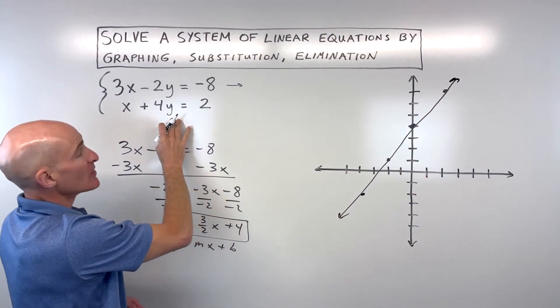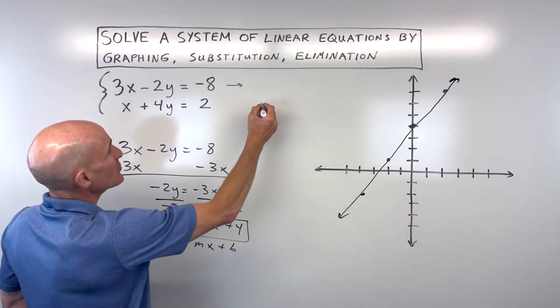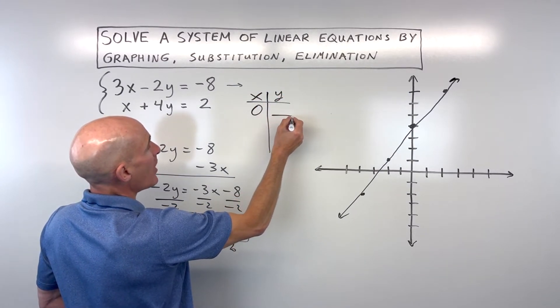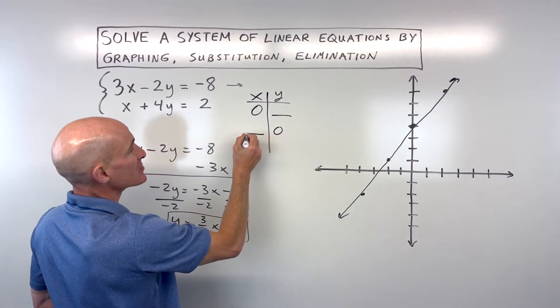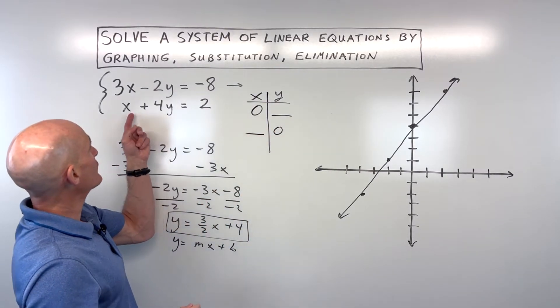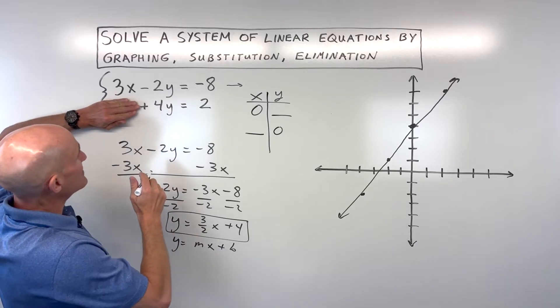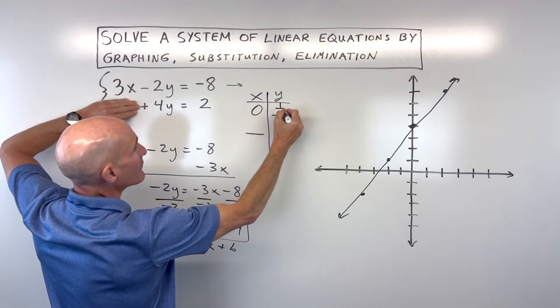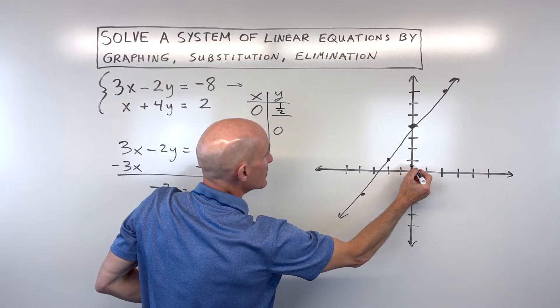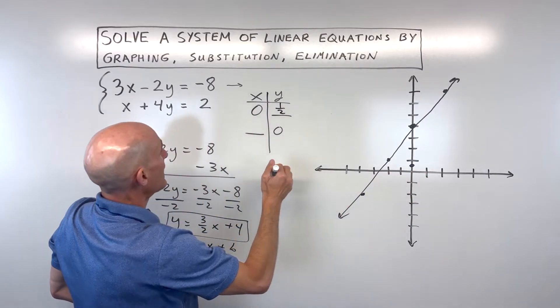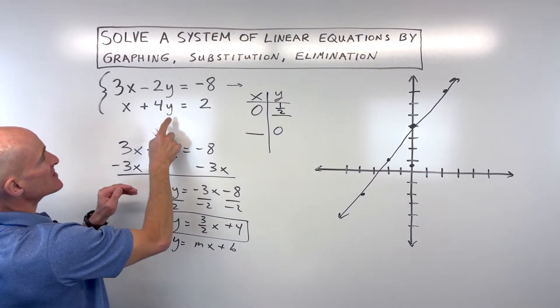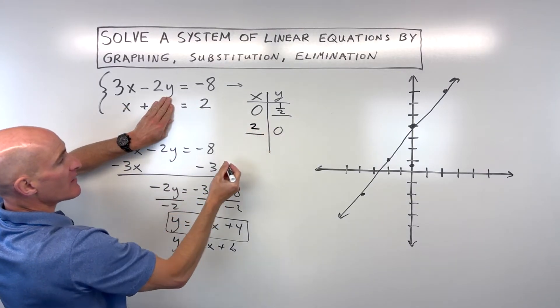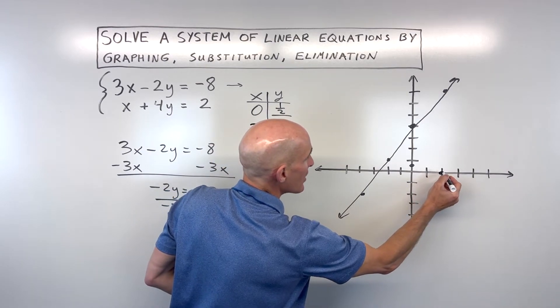Now the second line, what I'm going to do is I'm going to do the intercept method. And the way we do the intercept method is we make a table, and we set x equal to 0, and find the y-intercept, and then we set y equal to 0 to find the x-intercept. If I put 0 in for x, that's going to make it 0. And if I divide both sides by 4, 2 divided by 4 is 1 half. So that means it's going to cross the y-axis right here at 1 half. And then if I set y equal to 0, 0 times 4 is 0. So I'm just going to cover that up since 0 is nothing. And you can see that x is equal to 2. That's our x-intercept. That's crossing right here.